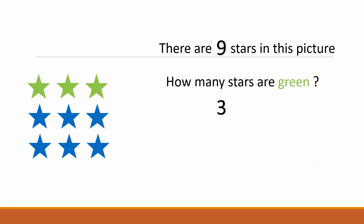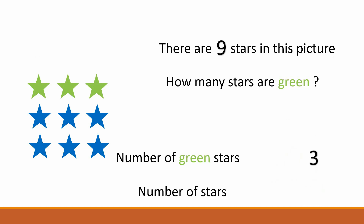Now if I ask you what fraction of stars are green, let's write it this way: number of green stars, which is three, over the total number of stars, which is nine. So three upon nine is the fraction of green stars. Voila — we have our first fraction!